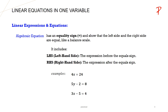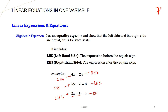In the first equation, 4x is the left hand side (LHS) and 24 is the right hand side (RHS). In the second equation, 5y-2 is LHS and 8 is RHS. In the third equation, 3x-5 is LHS and 4 is RHS.